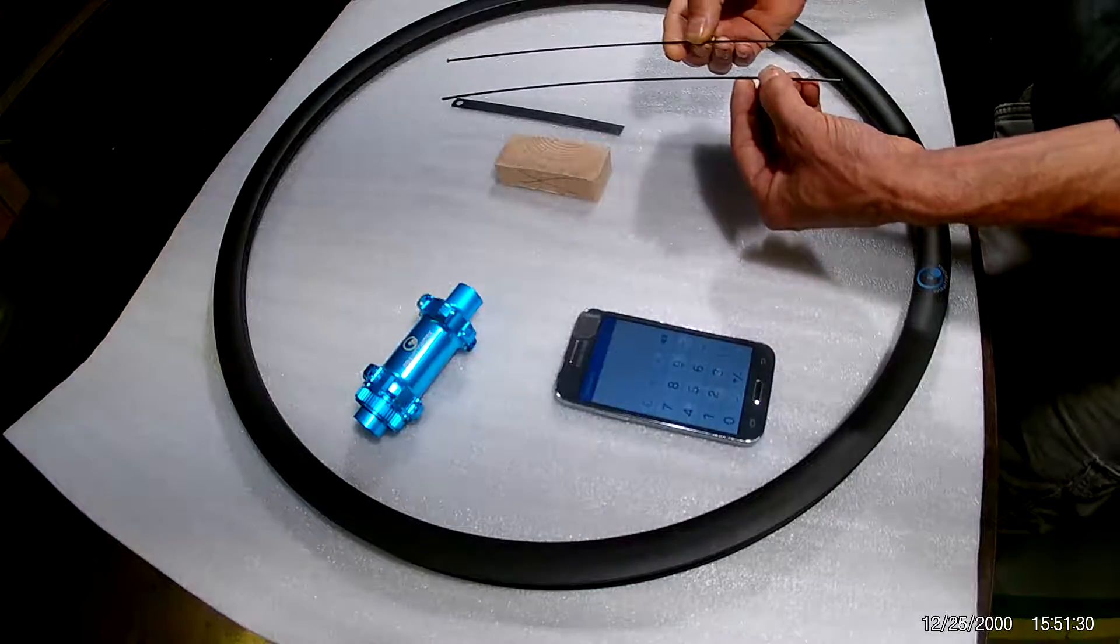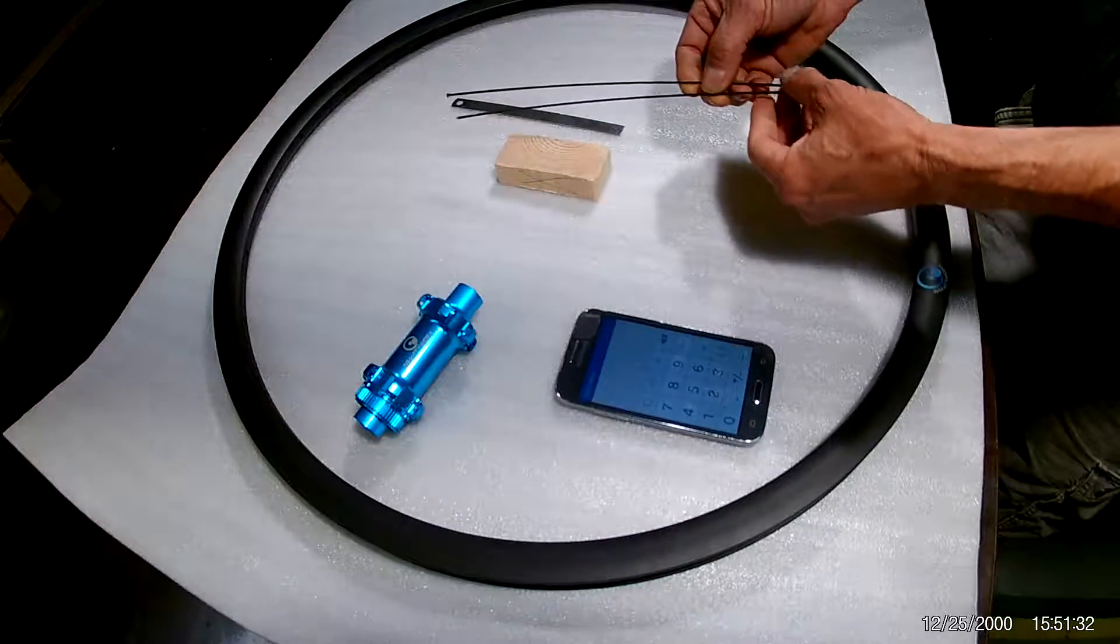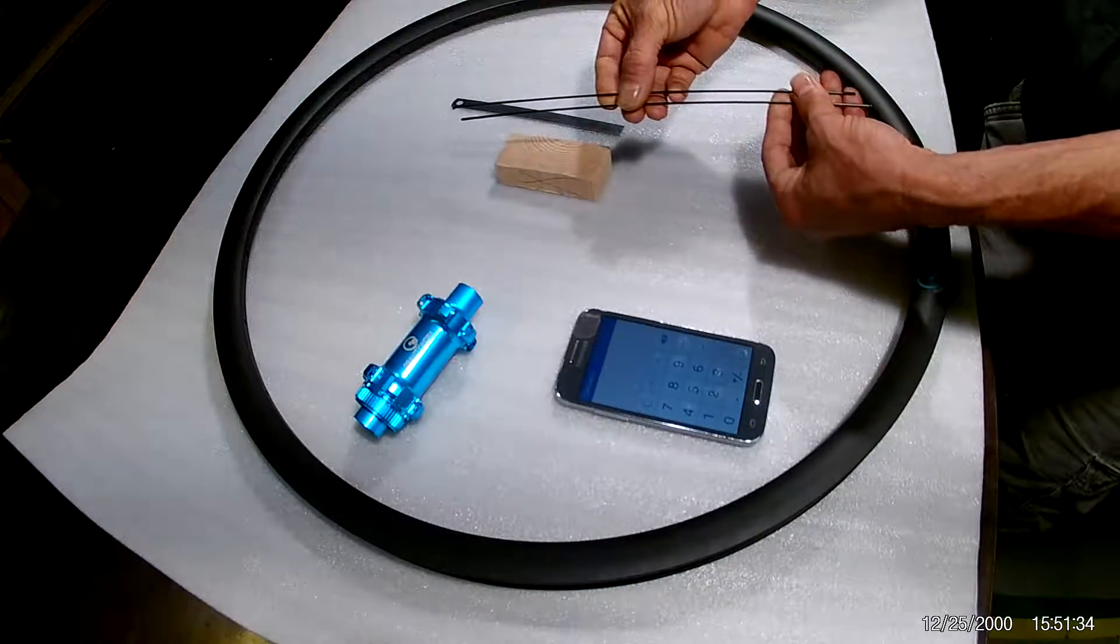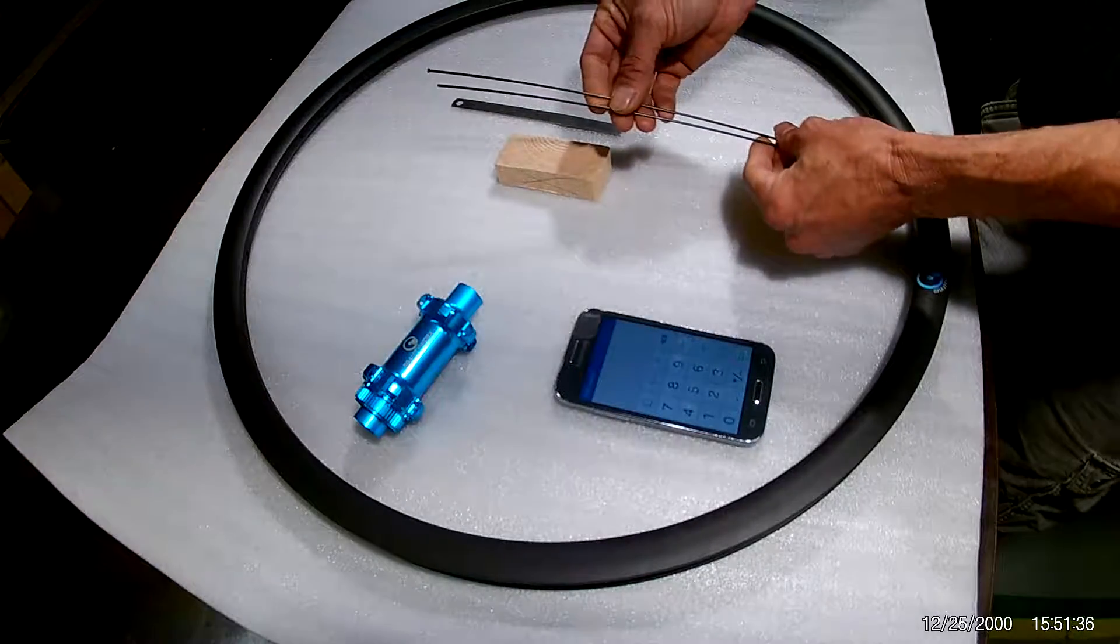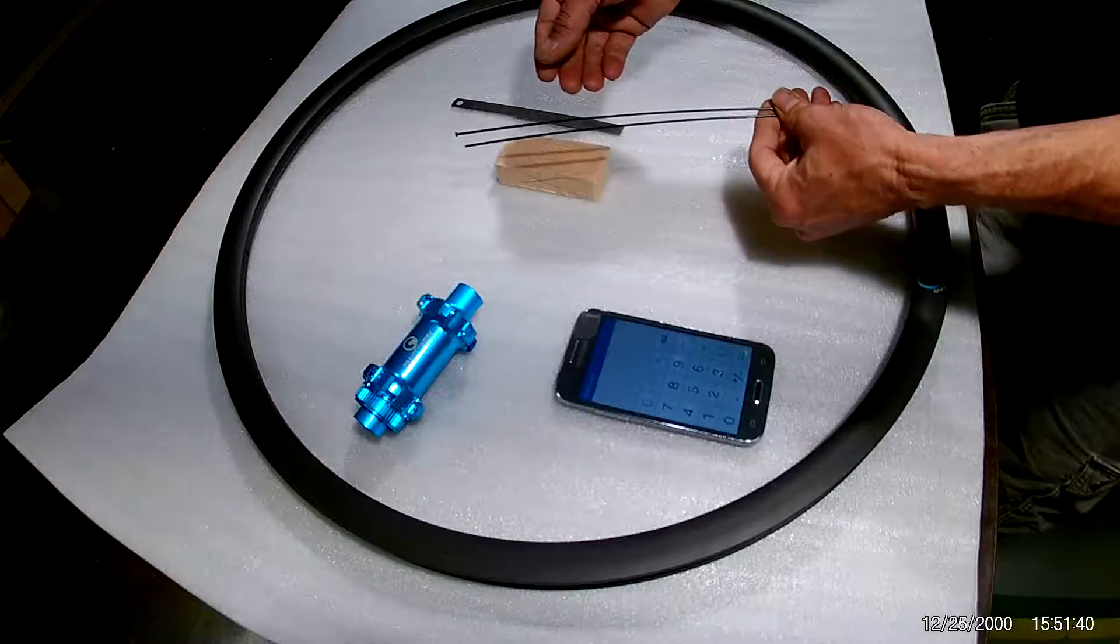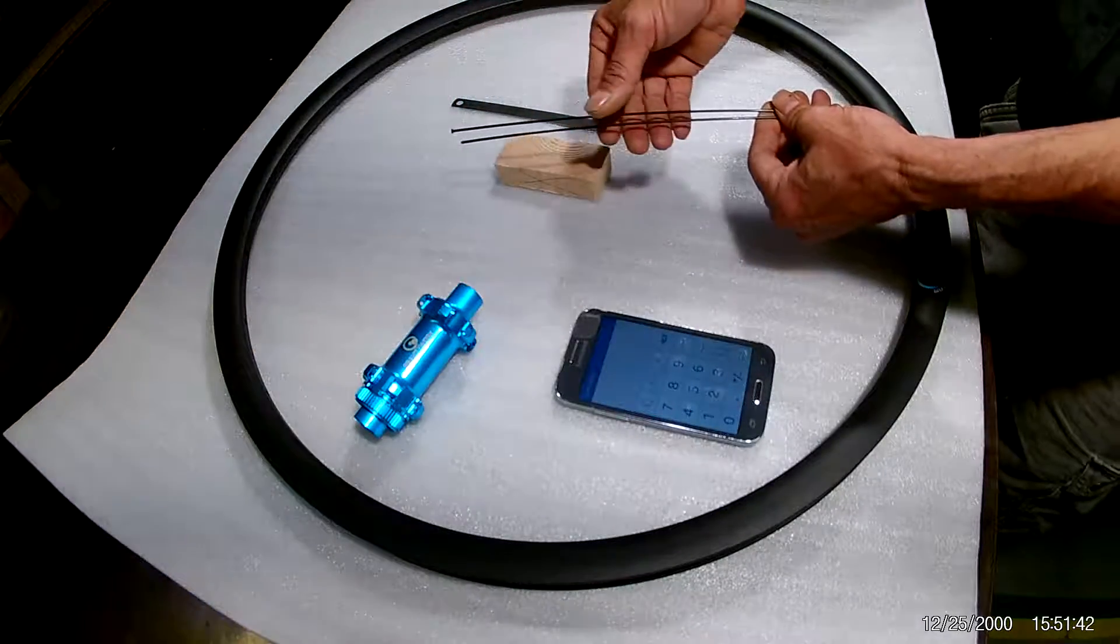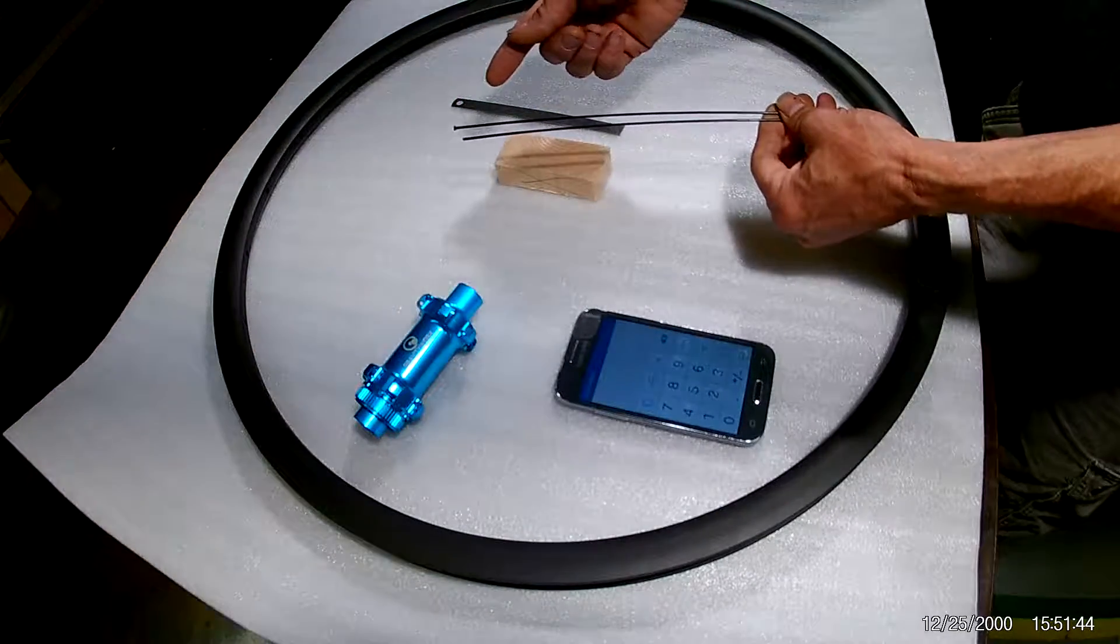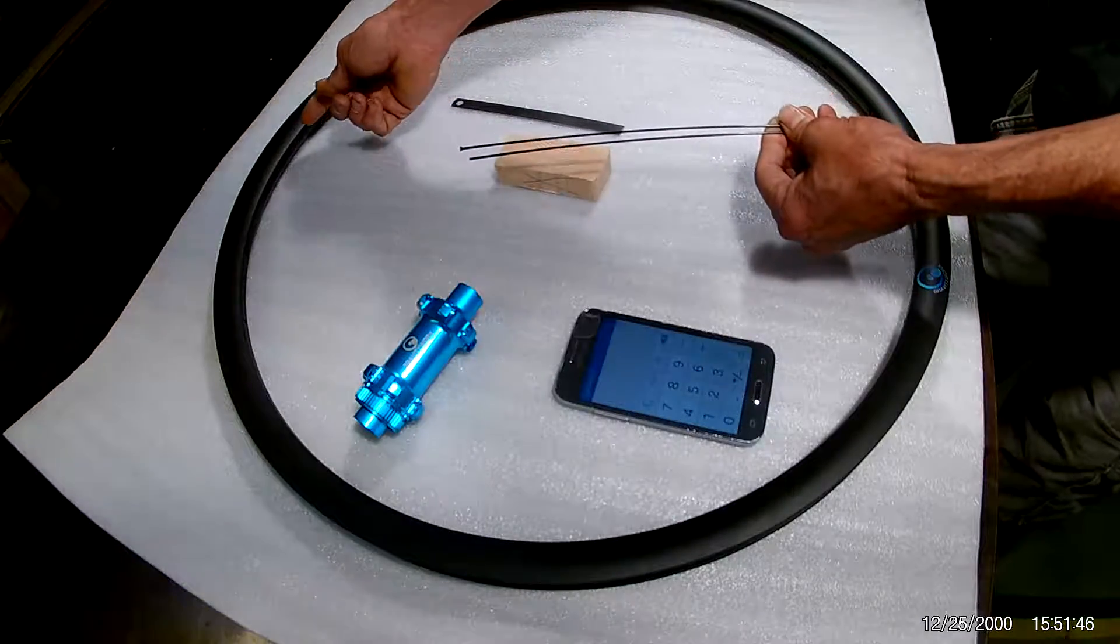All you need are a couple of long spokes. In this case, I've got a pair of 294 millimeter straight pole spokes. You could do this with J-bends also. All you would have to do is cut the head off of the J-bend, leave the J-bend because you're going to need that to hook on a spoke hole.